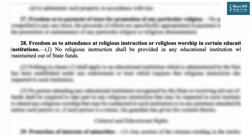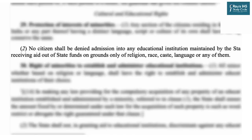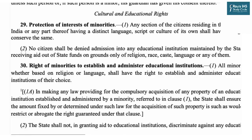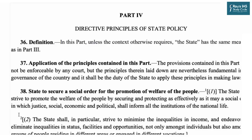Cultural and educational rights under Articles 29 and 30 are very important. Under clause 2 of Article 29, no citizen shall be denied admission into any educational institution maintained by the state or receiving aid from state funds on grounds of religion, race, caste, language, or any of them. Article 30 gives rights to all minorities — whether based on religion or language — to establish and administer educational institutions of their choice.